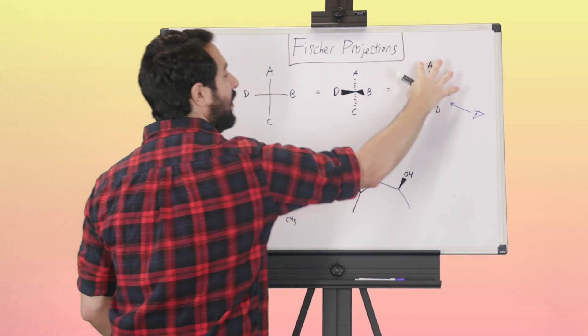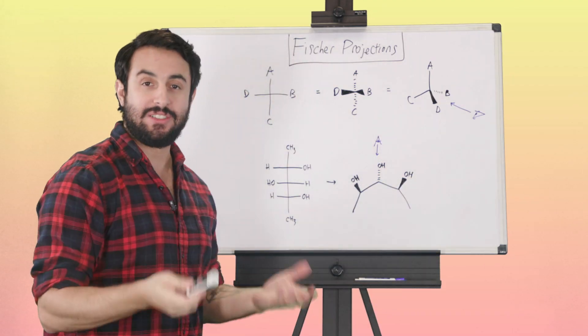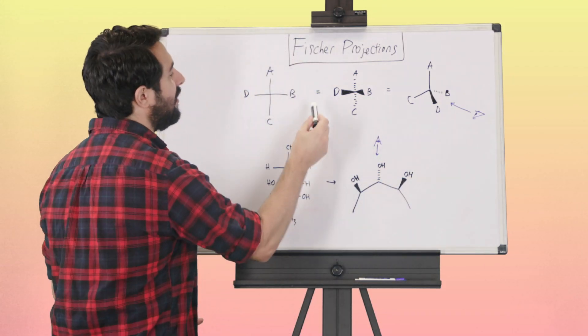So that's just the necessary information we need to know: horizontal implies wedge, vertical implies dash.